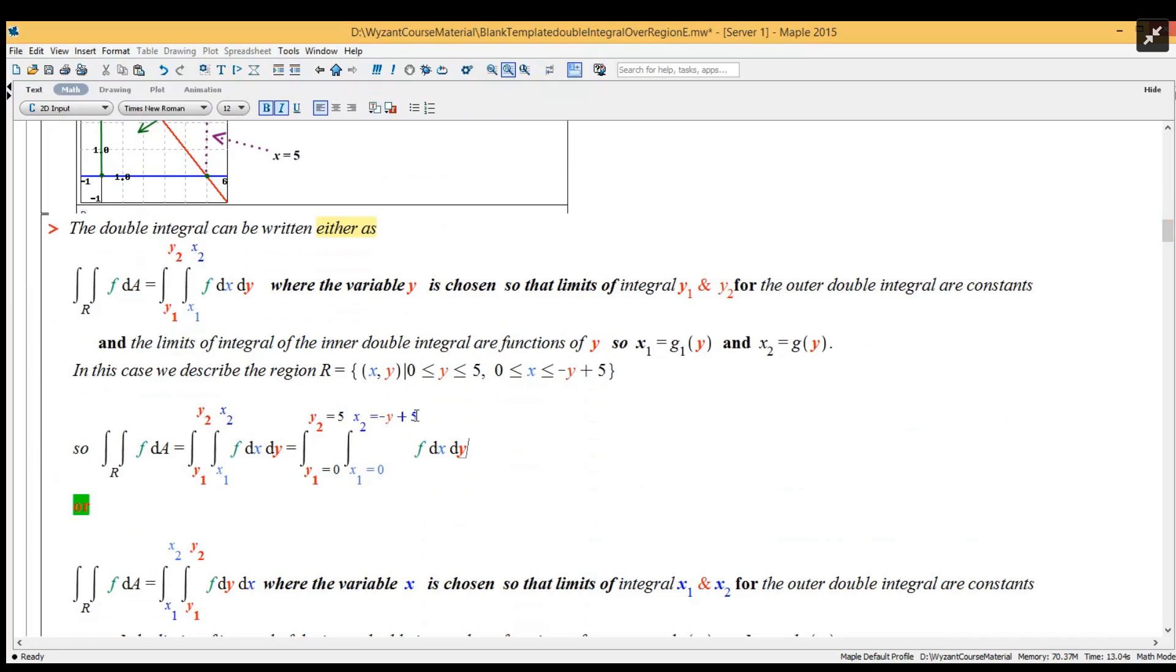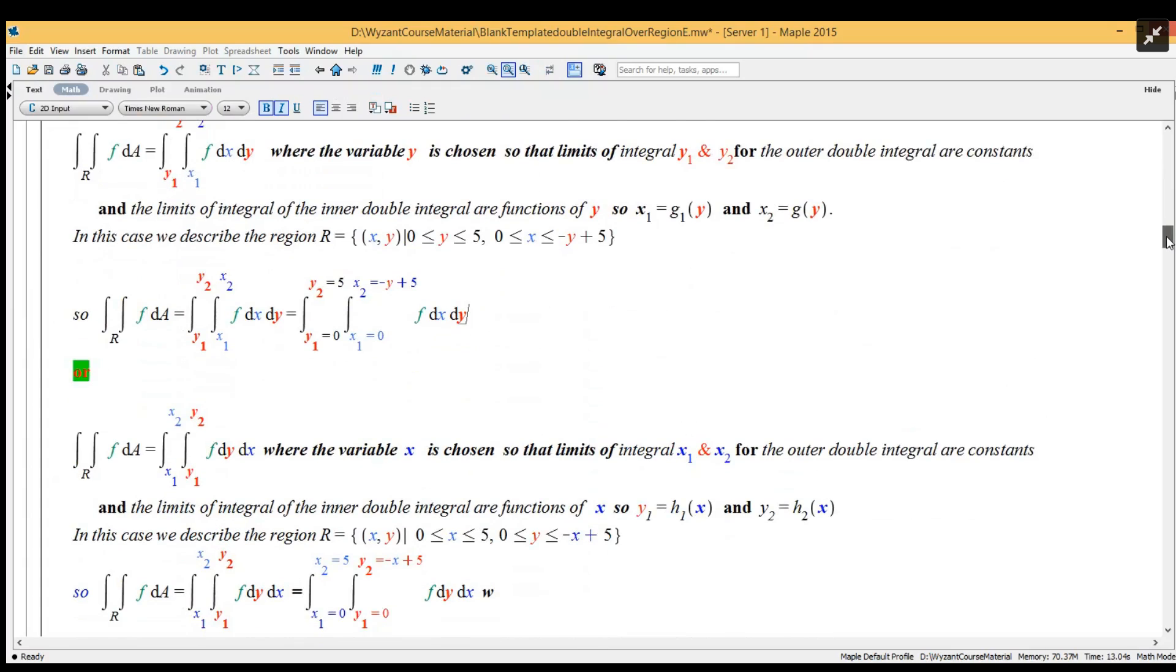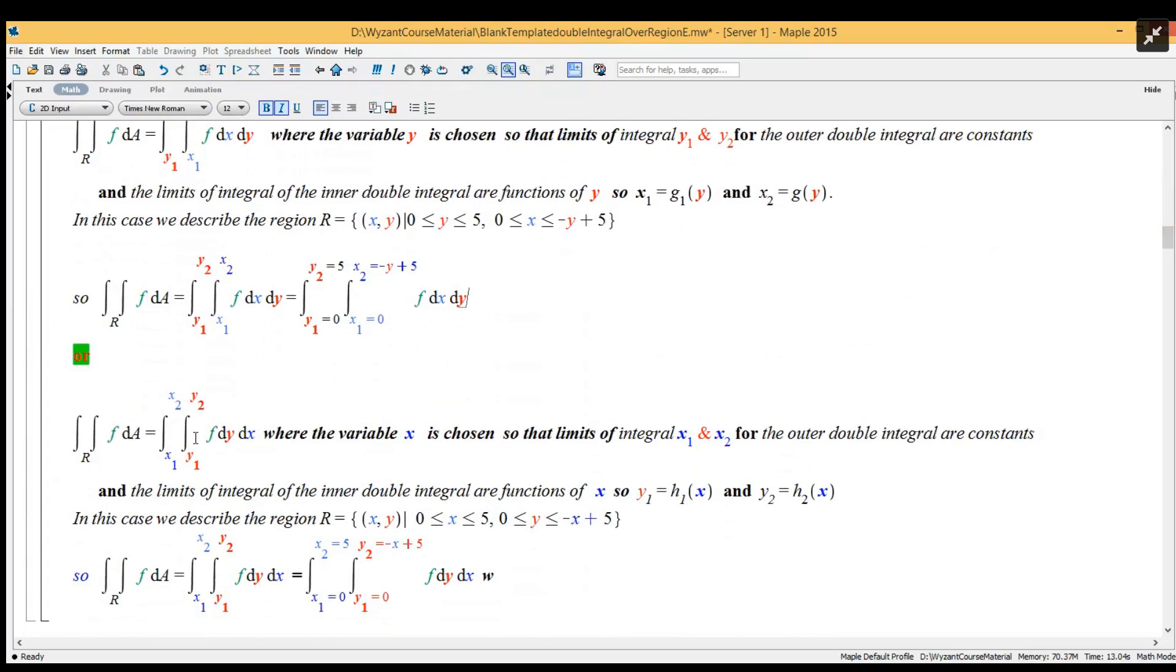And then x is going to be zero and x₂, the outer limit is minus y plus five. Or alternatively, we can rewrite this the same double integral where first the inner one is integration with respect to dy. Let's actually start with the outer one.